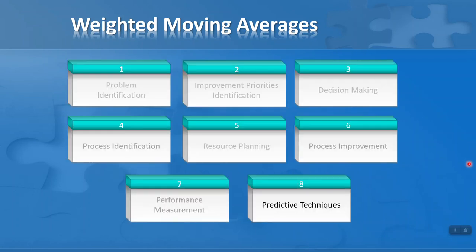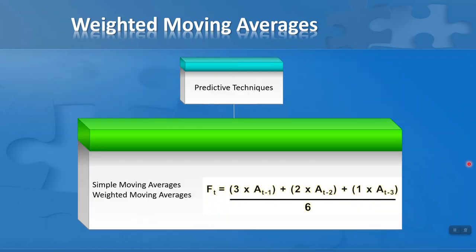Weighted moving average is a predictive technique. In this section we have two techniques: a simple moving average, which was the subject of the previous lesson, and the weighted moving average which we're going to look at here. The lessons for both are very similar. The formula for the weighted moving average is the main difference between the two types.